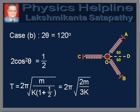When angle AOB is equal to 120 degrees, theta is equal to 60 degrees. Therefore, 2cos²theta equals 1/2, which gives T equal to 2π√(M / K(1 + 1/2)), which equals 2π√(2M / 3K).